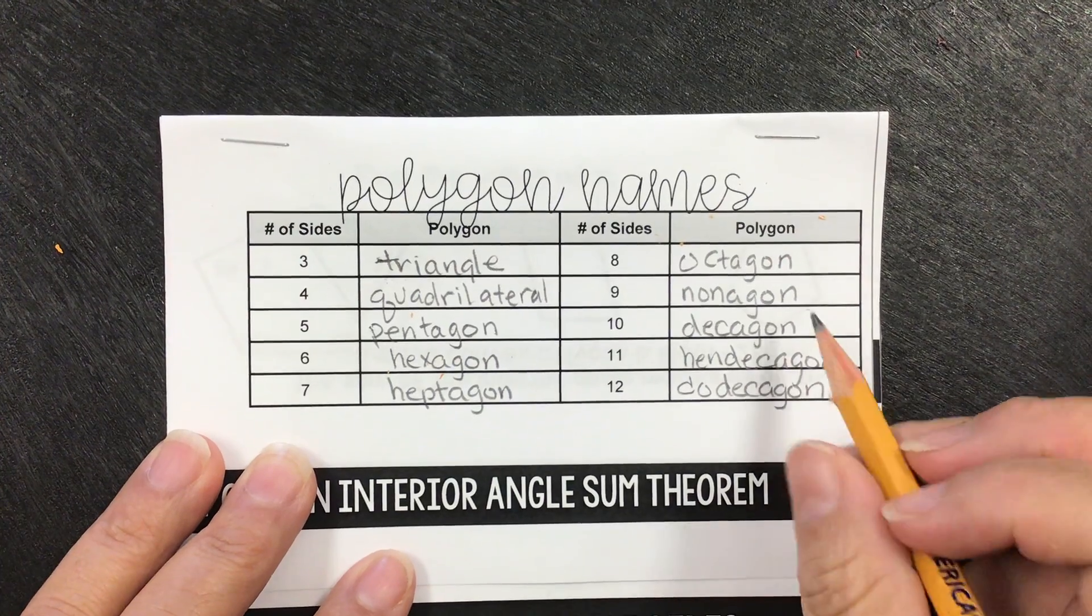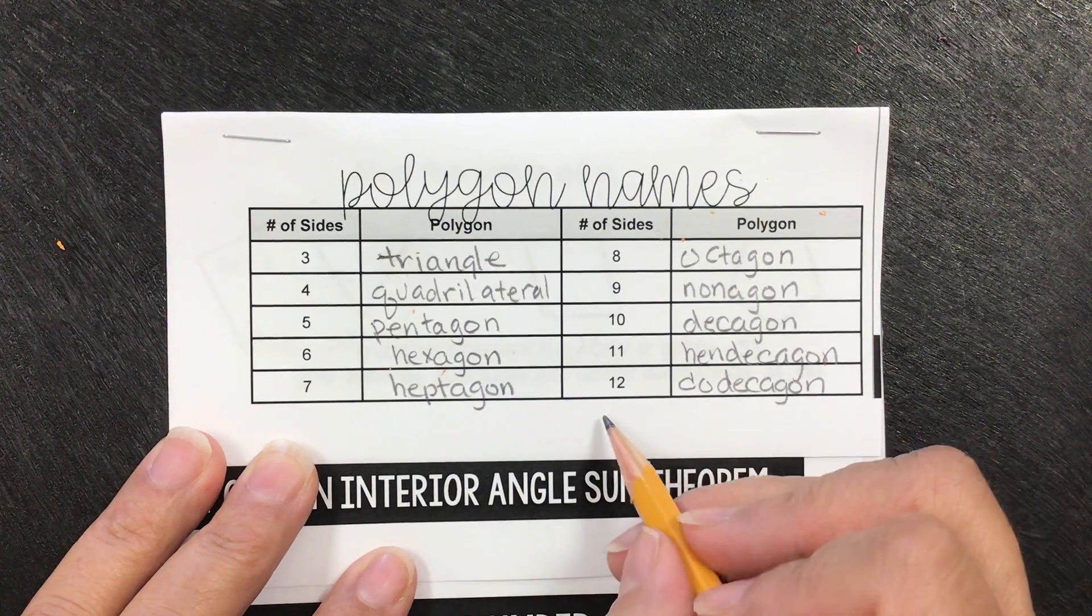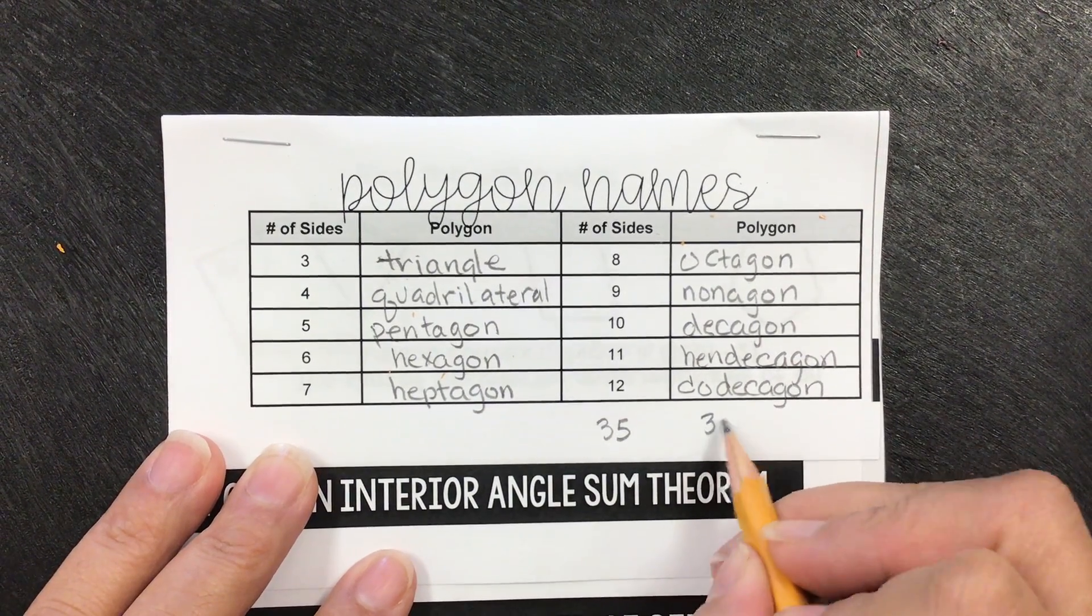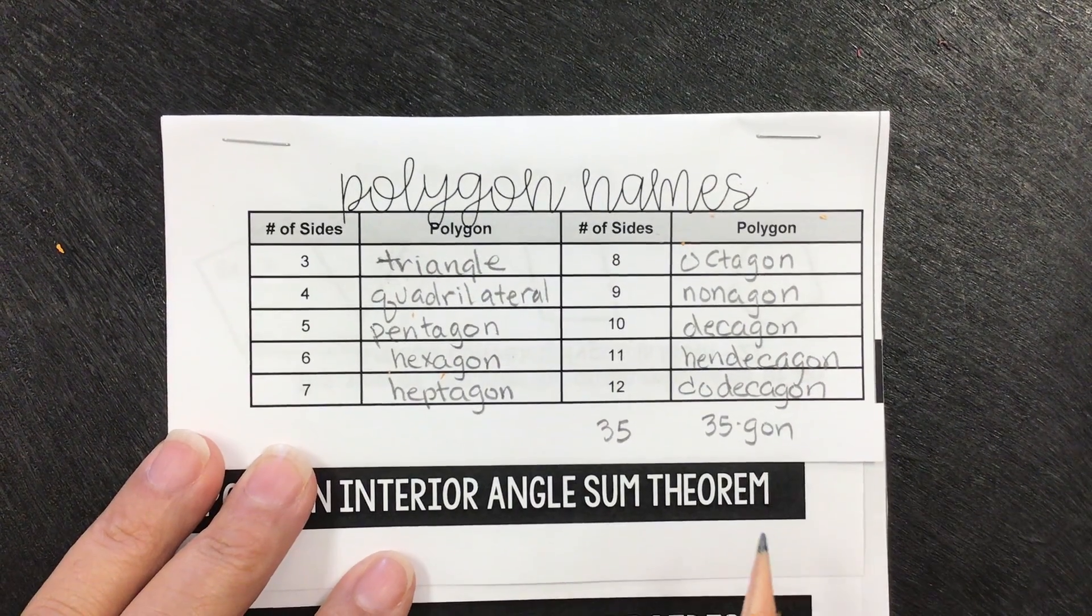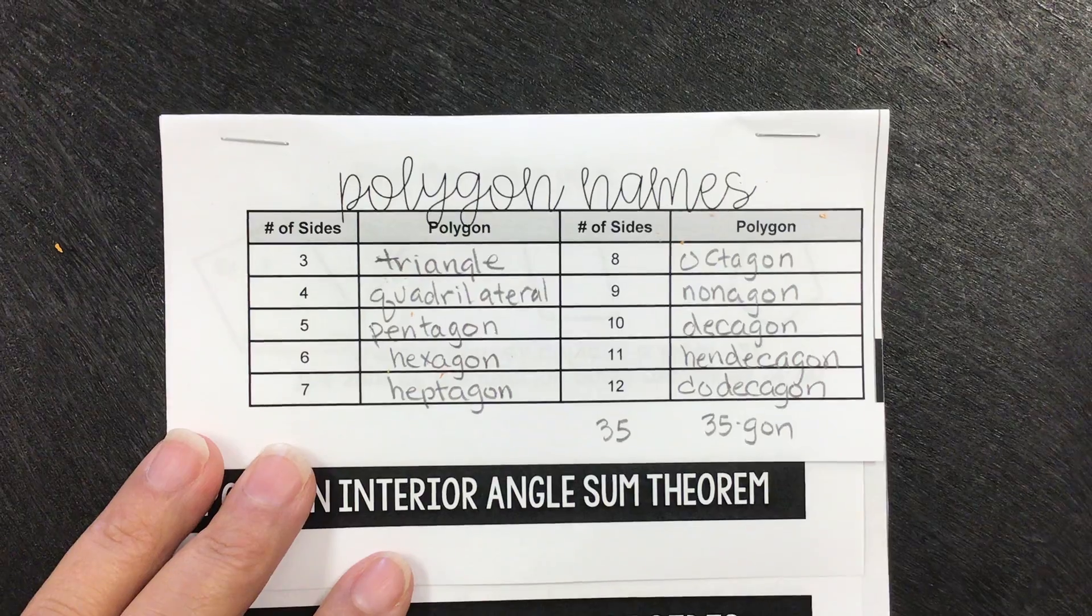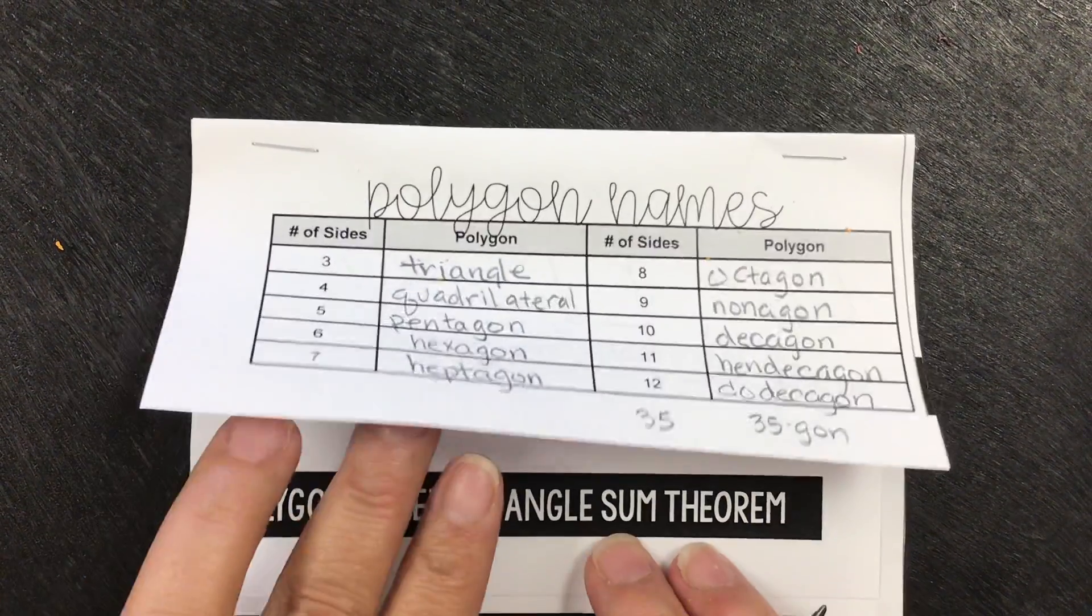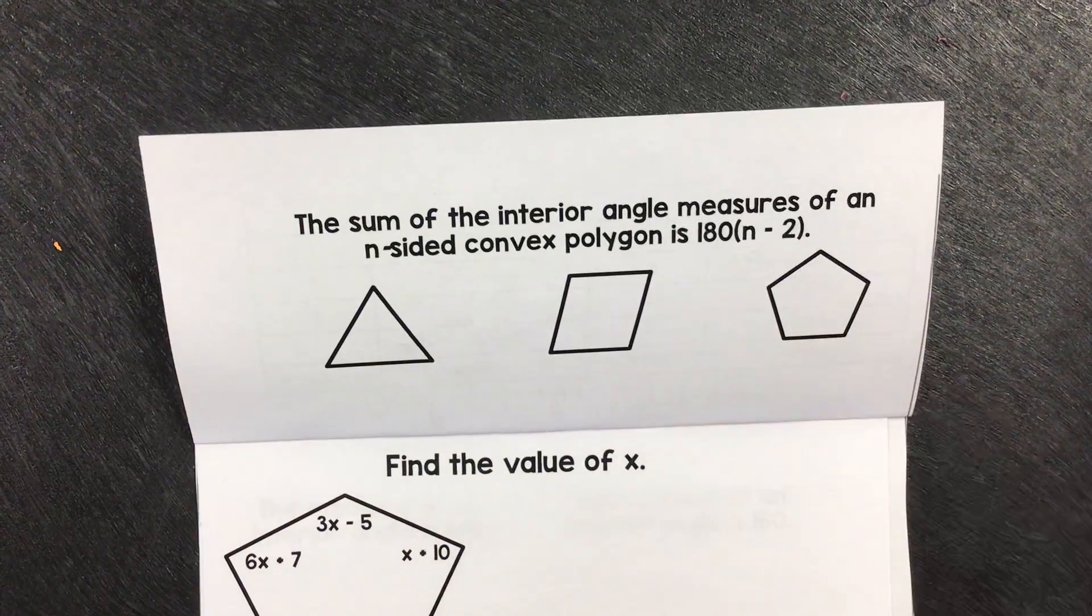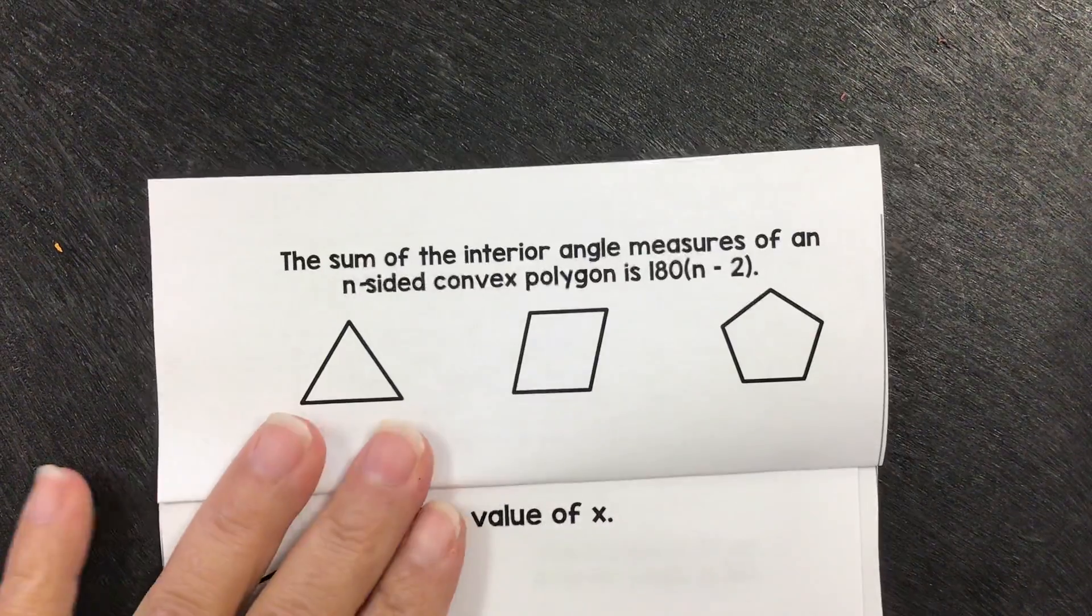And remember when we have values greater than twelve, we're gonna call them n-gons. So for example, if we have 35 sides we would call it a 35-gon. If we don't know how many sides it has, we can also call it an n-gon. Okay, if we fold the first tab over, I did put the highlighters in the geometry section just in case you need them.